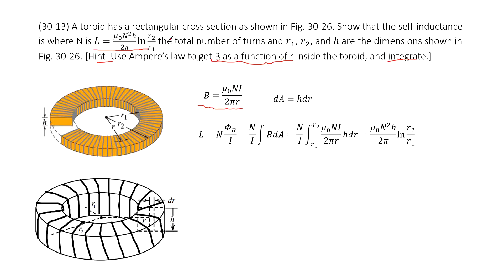Then, we need to find the self-inductance using the definition of self-inductance. This is N times φ_B divided by I. So we need to find φ_B, the magnetic flux through the ring.